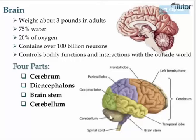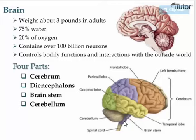Then we have the medulla, which is at the base of your brain and connects it to the spinal cord. It is about three centimeters long. The medulla controls all involuntary processes such as blood pressure, body temperature, heart rate, and breathing. Your medulla constantly receives sensory impulses from receptors in your blood vessels and uses this information to regulate blood pressure, sweating, respiration, and whatever else needs to be regulated.